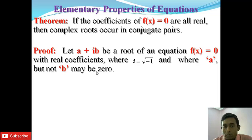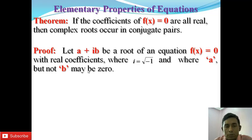Because if b is zero, then this quantity will become purely real, since a and b are real. So if b = 0, then ib = 0 and a + ib = a, which is a purely real number. For this reason, b is restricted to not be zero.